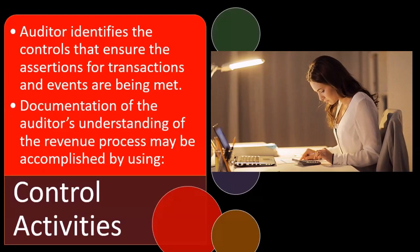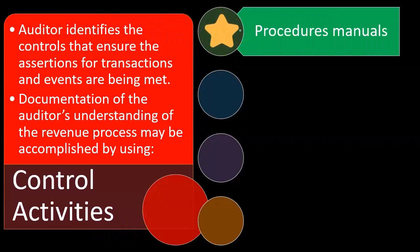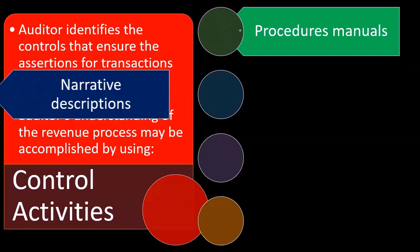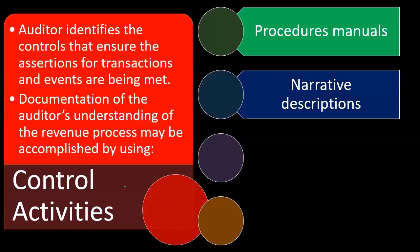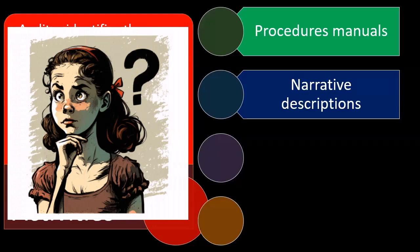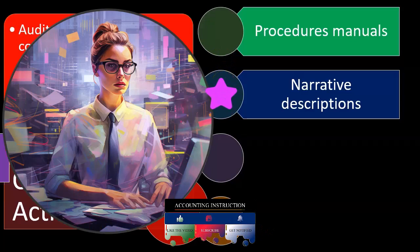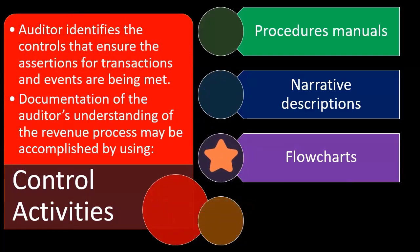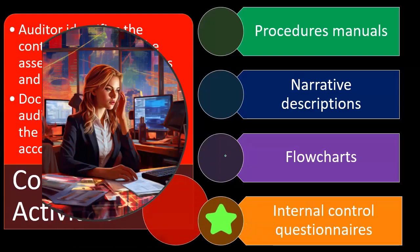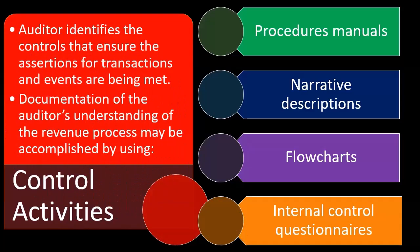Documentation of the auditor's understanding of the revenue process may be accomplished using procedural manuals outlining the procedures within revenue recognition. We could use procedures manuals, a narrative description of the controls, a flowchart showing major components of the system through the revenue recognition process, or an internal control questionnaire set up as part of our documentation related to control activities.